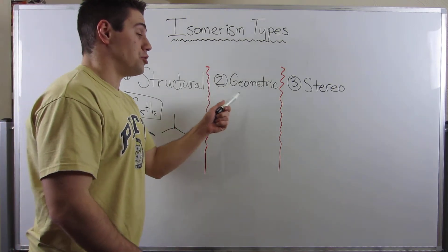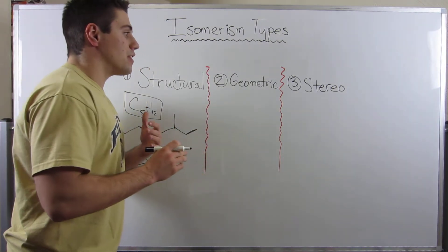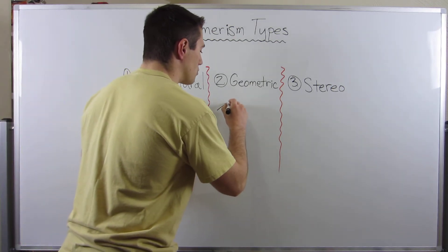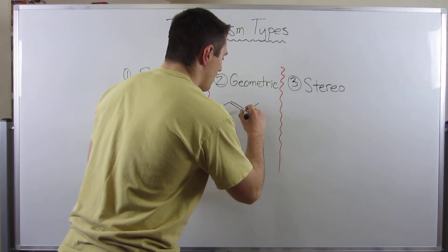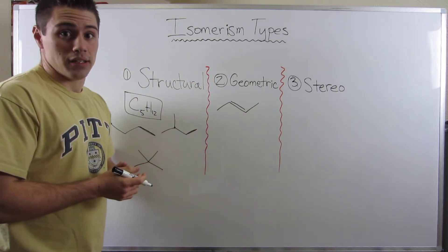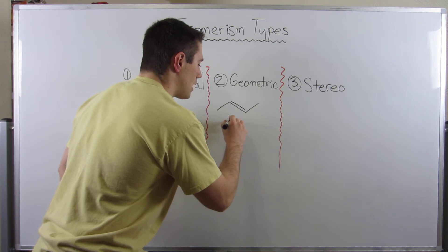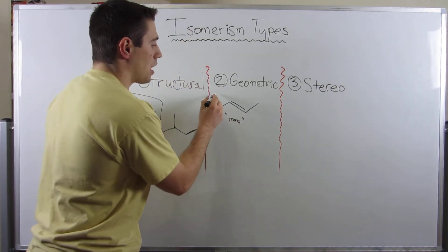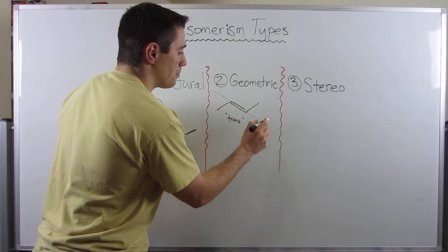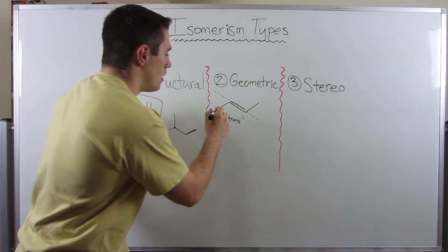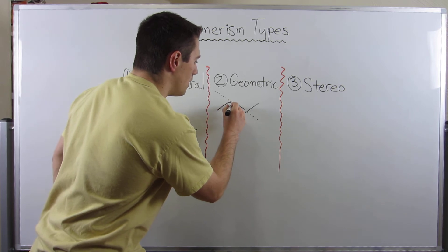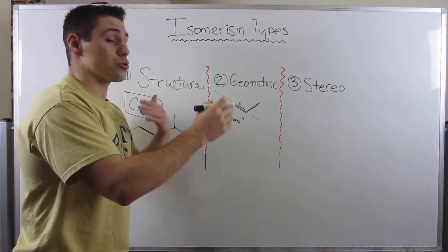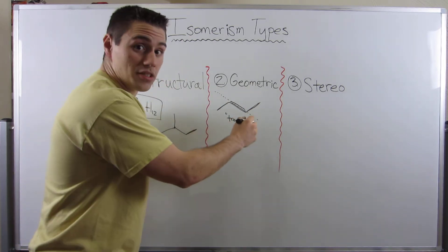Alright, so now I want to talk to you guys about geometric isomerism. This is really easy to spot because it involves double bonds. So what if I drew you guys a structure that you would name 2-butene, right? This is what's called a trans-double bond. The reason why it's trans is if you draw a dotted line along the double bond and then you walk it, meaning you just go across it. You see how we've crossed this imaginary dotted line? We've kind of traversed it? That's what a trans-double bond is.